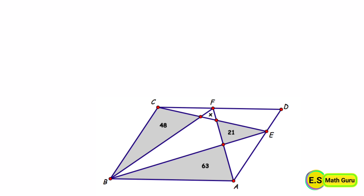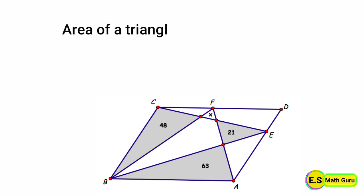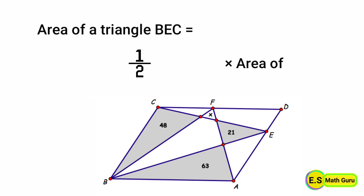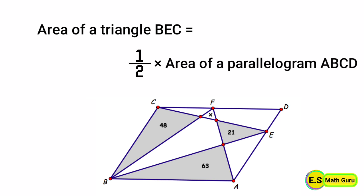Similarly, parallelogram ABCD and triangle BEC are on the same base BC and between the same parallel lines BC and AD. Therefore, the area of triangle BEC is equal to half of the area of parallelogram ABCD.